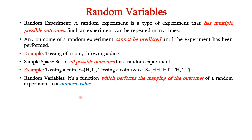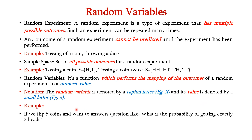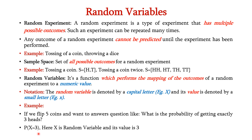Now let us see about random variables. A random variable is a function which performs the mapping of the outcomes of a random experiment to a numerical value. The random variable is denoted by capital letter X and its value is denoted by a small letter x. For example, if we flip 5 coins and want to answer the question: what is the probability of getting exactly 3 heads? Then we can express it as P(X = 3). Here X is the random variable and 3 is the numerical value assigned to this random variable X.